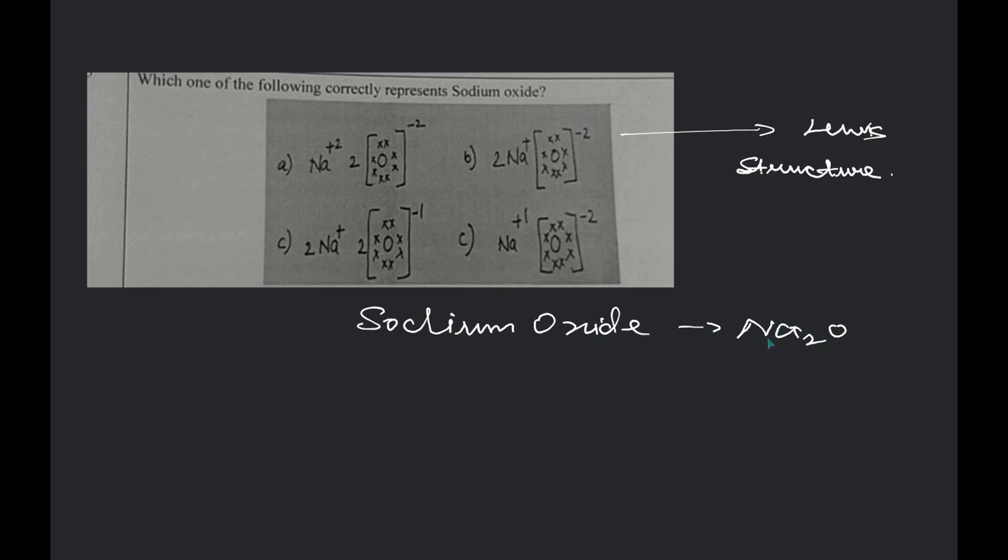So, Na2O basically, we can see there are two atoms of sodium, two sodium atoms and one oxygen atom. So, in the Lewis structure, we should have two atoms of sodium and one atom of oxygen present. From that, we can eliminate the structure which is not applicable.